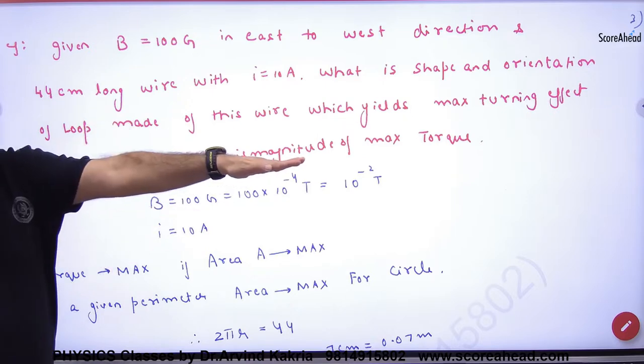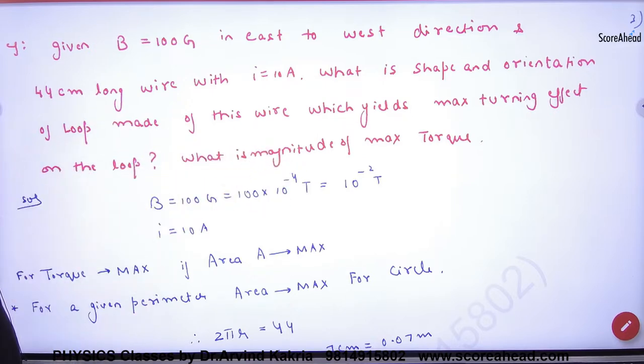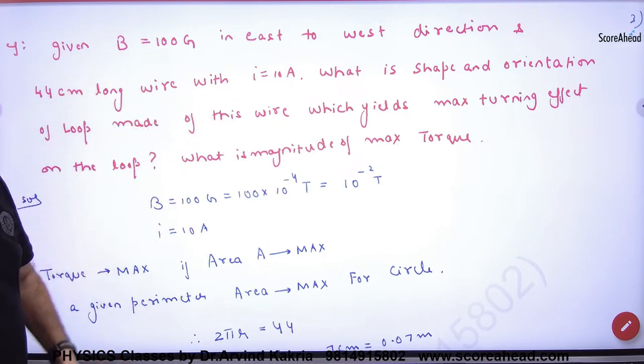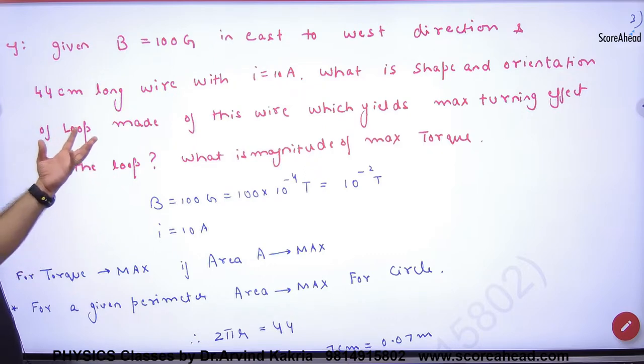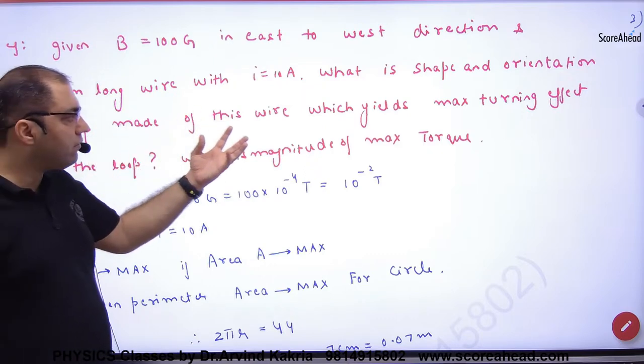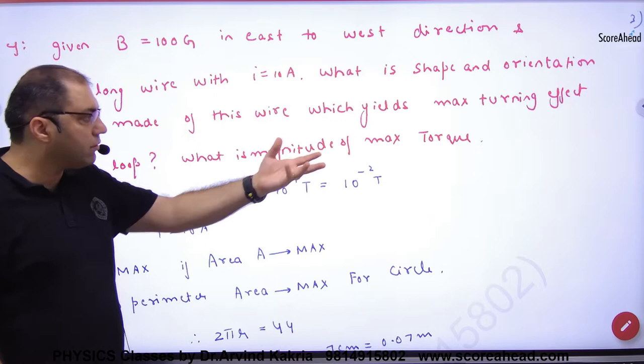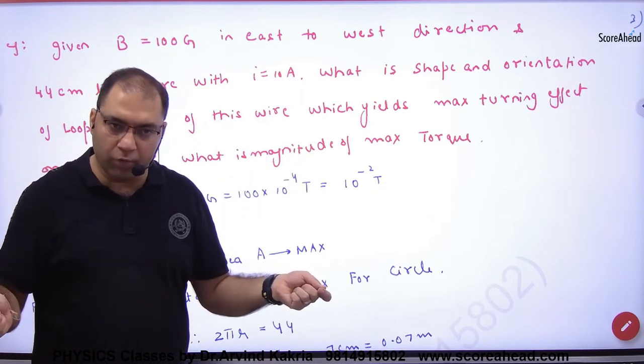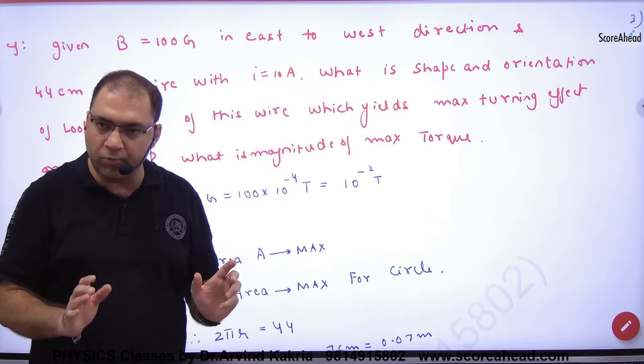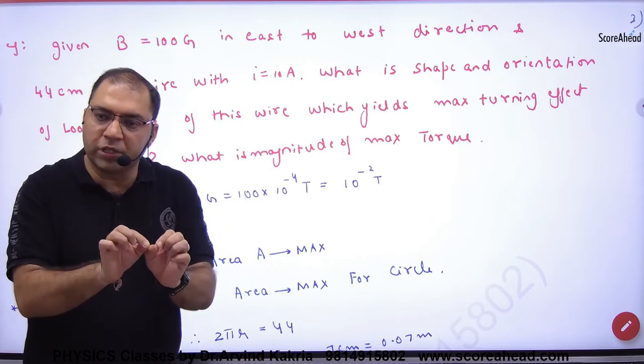East to west direction. In this, 44 cm long wire. What is shape and orientation of loop made of this wire which yields maximum turning effect? I will keep that length in magnetic field.